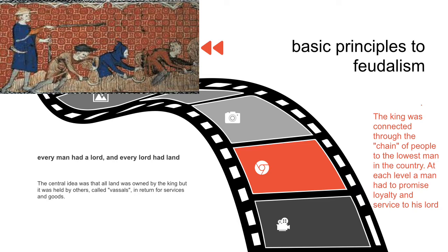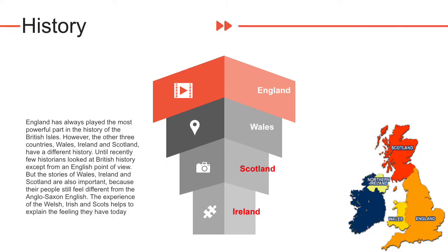If the king didn't give the nobles land, they would not fight for him. Between 1066 and the mid-14th century, there were only 30 years of complete peace, so feudal duties were extremely important. The king had to make sure he had enough satisfied nobles who would be willing to fight for him. England always played the most powerful part in the history of the British Isles. However, the other three countries — Wales, Ireland and Scotland — have a different history.